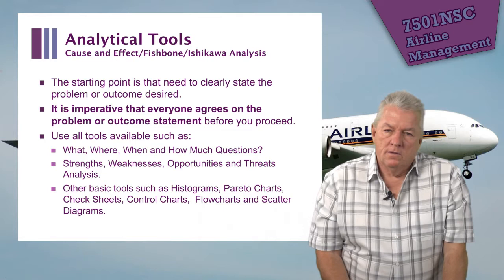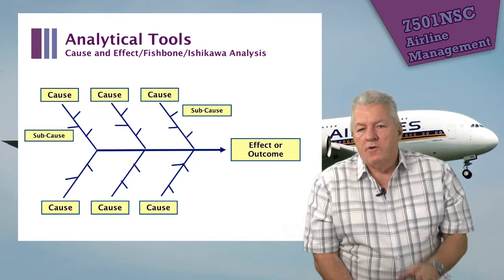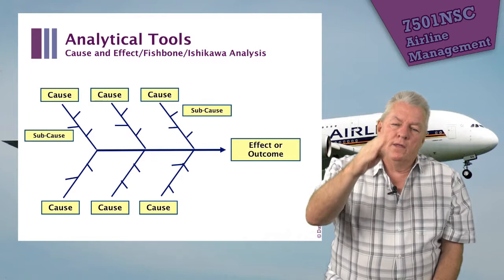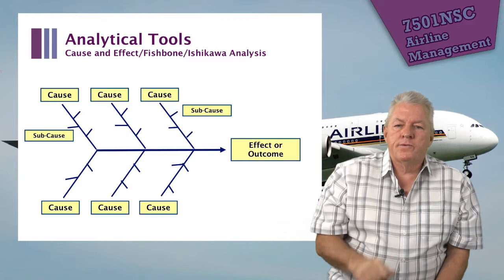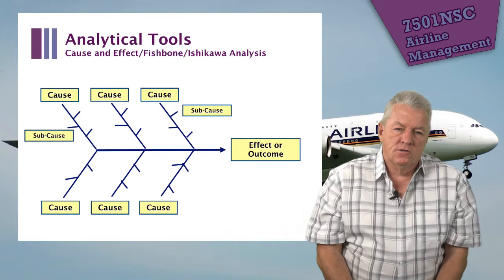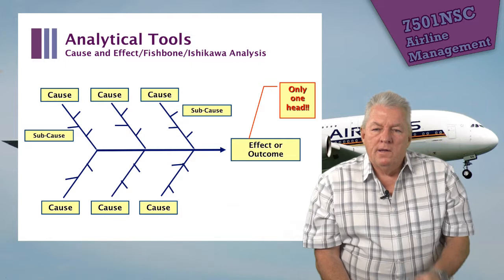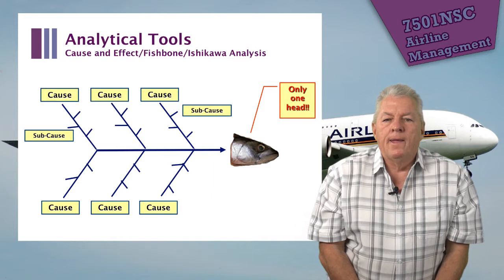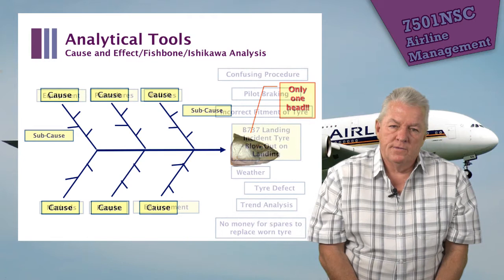The Ishikawa diagram is structured with the effect or outcome on the right-hand side — the spine of a fish — and the ribs off it representing each of the major causes and sub-causes, whether it's an accident or an outcome you want to achieve. Mr. Ishikawa said there's only one head. The fish can only have one head, so you need to make sure everyone has agreed on what it is you want to achieve.